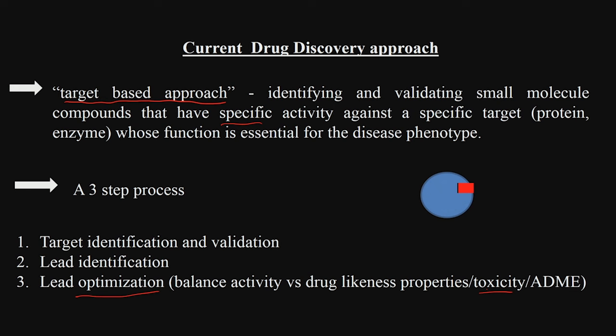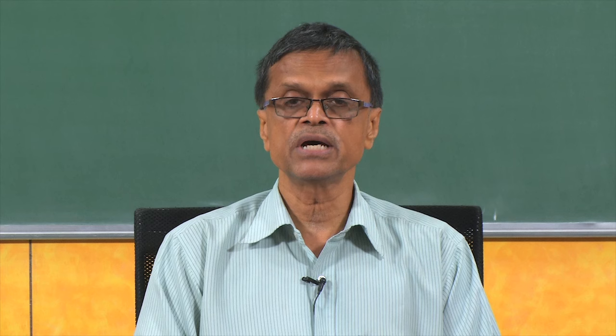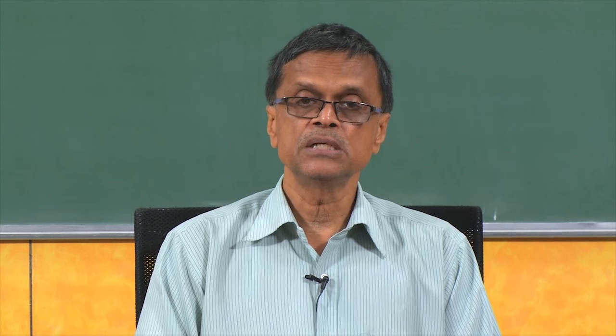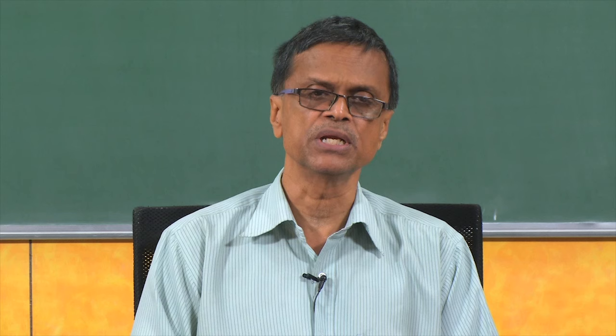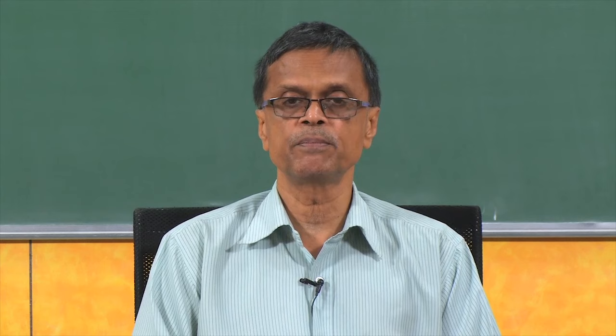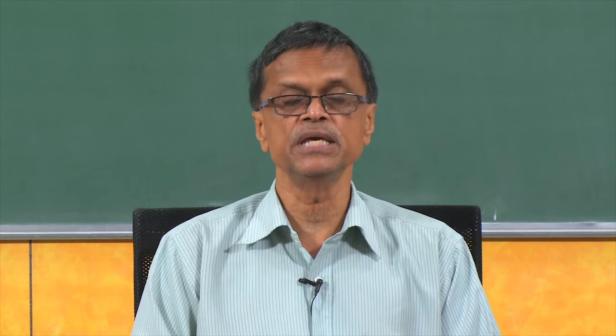When doing lead optimization, you need to balance activity as well as the various drug likeness properties. The very best compound from your lab might not have all these drug likeness properties — maybe it is not very stable at the stomach pH of 2, whereas the second best compound may satisfy all these properties. You may select the second best compound and take it further into preclinical and clinical tracks. It is a balance between activity versus drug likeness, ADME, toxicity, side effects, and stability.